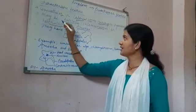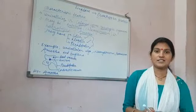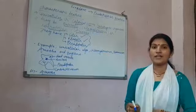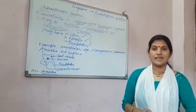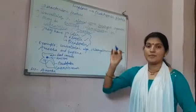They may be autotroph. Autotroph means they can synthesize their food, for example, Chlamydomonas. Or heterotroph, that means they always depend on others for their food, for example, amoeba.